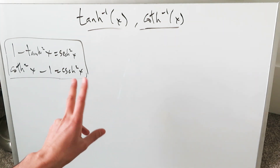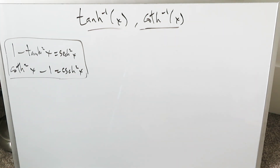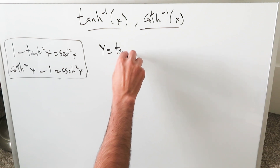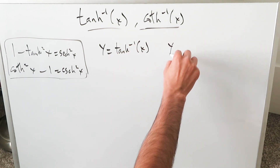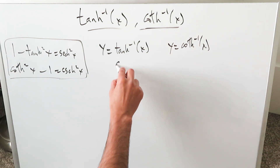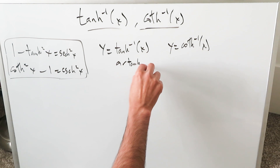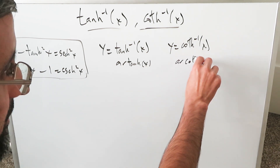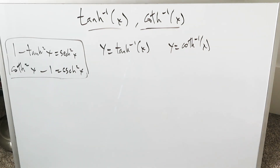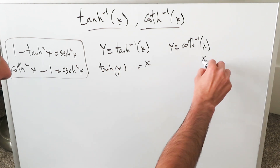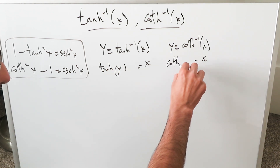Again, keep in mind two different functions: inverse hyperbolic tan and inverse hyperbolic cotan — they have identical derivatives. The procedure begins as this: y is equal to the inverse hyperbolic tan of x, and alongside that, y is equal to inverse hyperbolic cotan of x. These can also be called arctanh(x) or arc hyperbolic cotan — they are synonymous. Now you solve for x in each case: x equals hyperbolic tan of y, and over here x equals hyperbolic cotan of y.